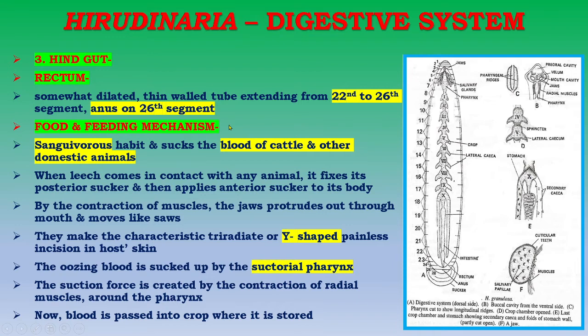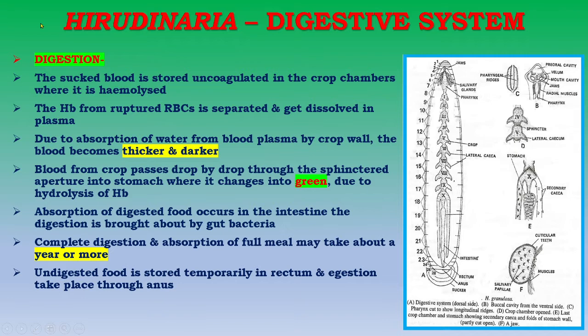Hirudinaria has a sanguivorous habit and sucks the blood of cattle and other domestic animals. When the leech comes in contact with an animal, it fixes its posterior sucker and applies the anterior sucker to the host's body. By contraction of muscles, the jaws protrude out through the mouth, moving like saws, and make a characteristic tri-radiate Y-shaped painless incision in the host skin. The oozing blood is sucked up by the suctorial pharynx through contraction of radial muscles, and blood is then passed into the crop where it is stored.